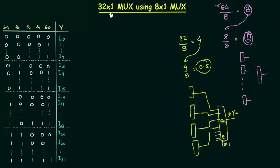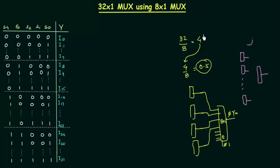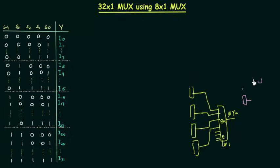We require a 32x1 MUX, and I have made the truth table for a 32x1 MUX. I have not represented the intermediate values because they are not required. We are going to use this truth table to obtain the circuit. Since we have 4 as an integer from the division, we are going to use 4 8x1 MUXes to obtain the 32x1 MUX. We will also use basic gates: AND, OR, and NOT.